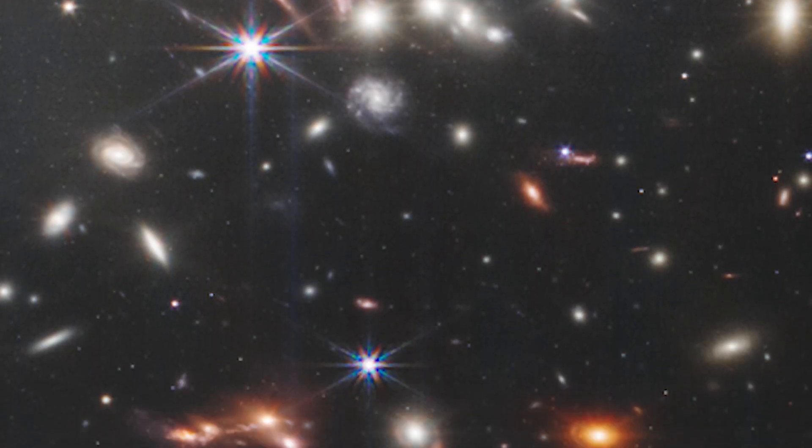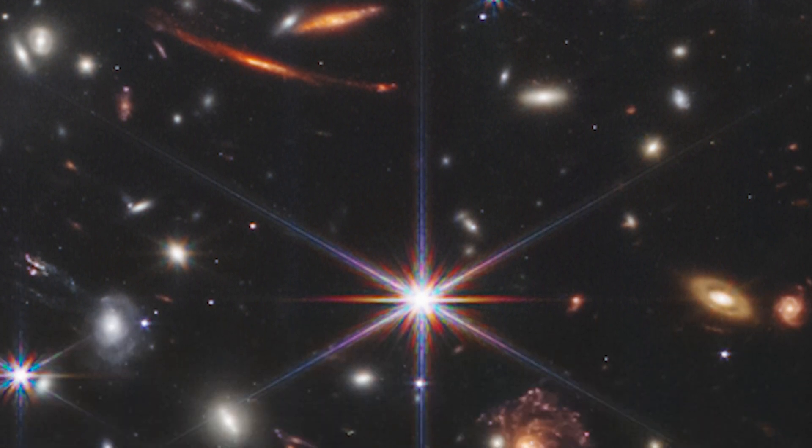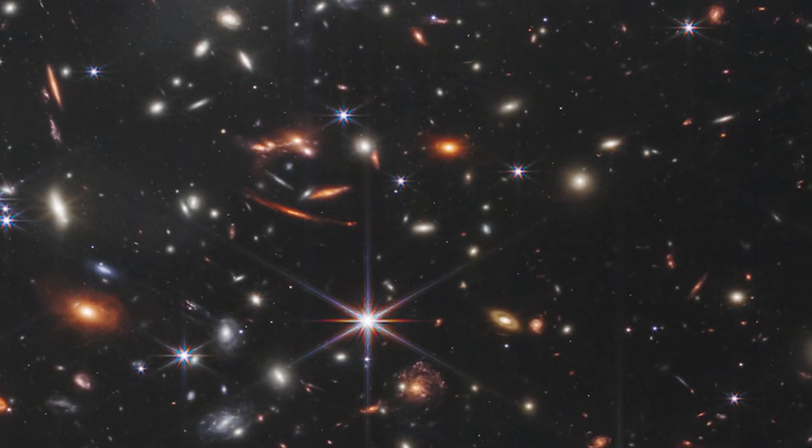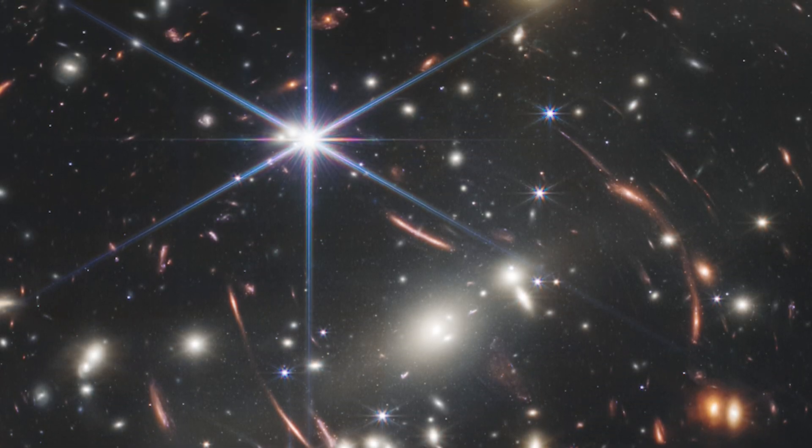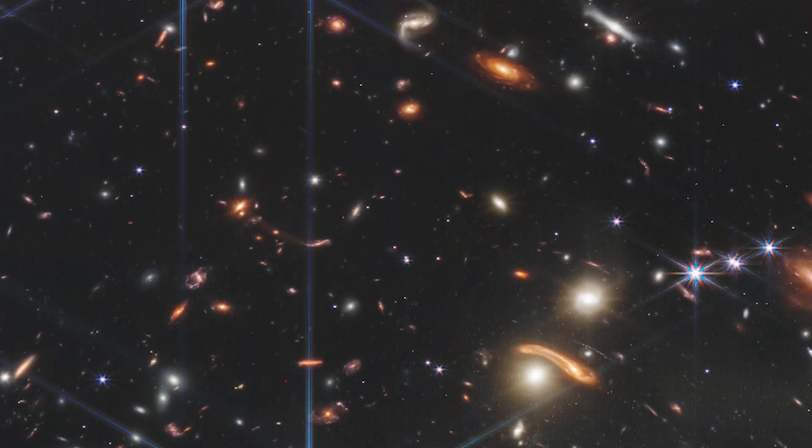Webb's near-infrared camera has sharpened those distant galaxies, revealing previously unseen phenomena like star clusters and hazy regions. Soon, researchers will begin to learn more about the galaxies' masses, ages, histories, and compositions as Webb seeks the earliest galaxies in the universe.